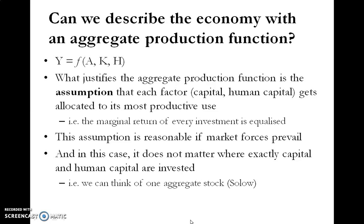Let's start off with something familiar. You are all used to describing an economy with an aggregate production function. Your aggregate production is basically a function of capital and human capital. What justifies that production function is a specific assumption — that each factor, in this case capital and human capital, gets allocated to its most productive use. In other words, the marginal return of every investment is equalized. This assumption is reasonable if we operate in a context where market forces prevail, and in this case it doesn't matter where exactly capital or human capital is invested — you can think of basically only one aggregate stock. This is taken from the Solow model.